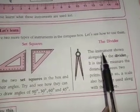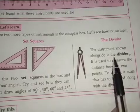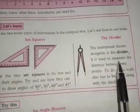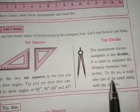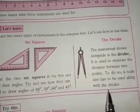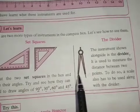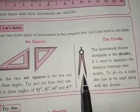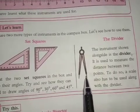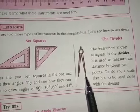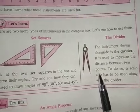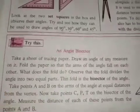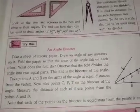The next instrument is the divider. It is used to measure the distance between two points. To do so, the scale also has to be used along with the divider. The divider has two parts and is used along with a scale to measure distances.